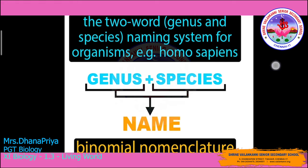Is binomial nomenclature still used today? Yes. The binomial nomenclature system developed by Carolus Linnaeus was published in various works between 1735 and 1758, and it established the convention of binomial nomenclature which is still used today by biologists worldwide.